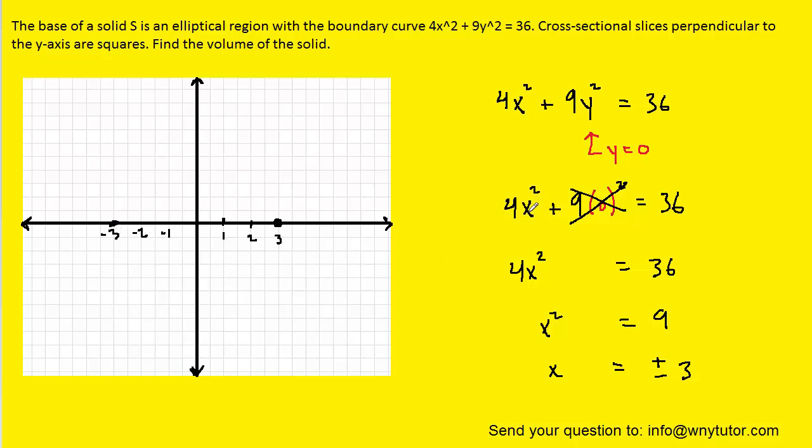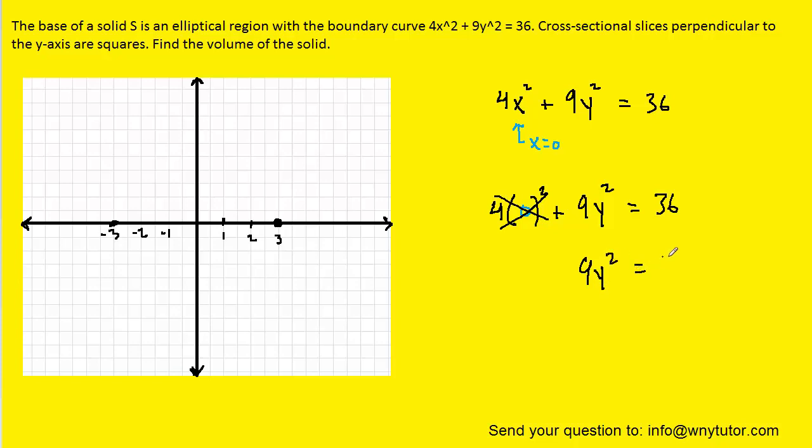And now what we'll do is go back and find the y-intercepts by letting x equal 0. And by letting x equal 0, this term will eliminate. We'll have 9y^2 = 36. We'll divide both sides by 9. And then we'll take the square root, and we can see that the two y-intercepts are located at plus or minus 2. So let's go ahead and plot those. And now that we've plotted the x and y-intercepts, we can connect these four points together with a smooth curve to make the ellipse.